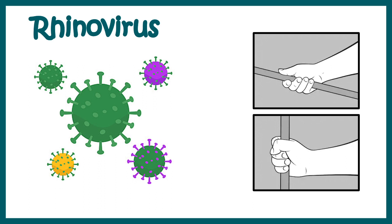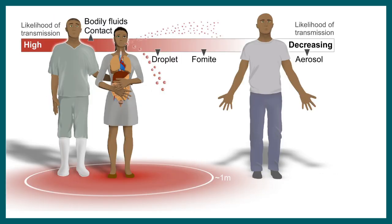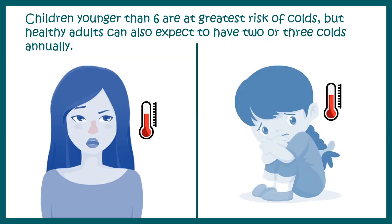Rhinoviruses can spread due to contact or through droplet infection. Larger droplets settle down on surfaces, but fomites — which are smaller droplets — can travel a longer distance. So maintaining social distance is a good way to avoid this kind of disease. Children below the age of six years are more susceptible to common cold.